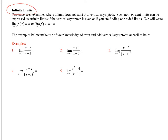Next page: infinite limits. We've seen examples where a limit does not exist at a vertical asymptote. Now we want to classify them graphically. If both sides of the vertical asymptote go to positive infinity, we say positive infinity. If both sides go to negative infinity, we say negative infinity. With one-sided limits at vertical asymptotes, you always say positive or negative infinity. The only time you wouldn't is if one side goes up and the other goes down — then the overall limit does not exist.